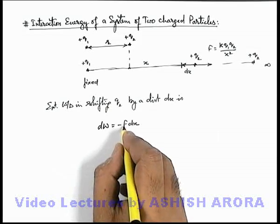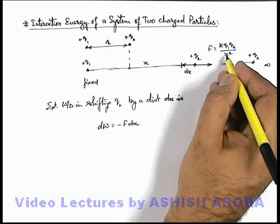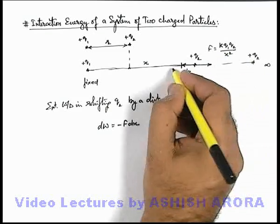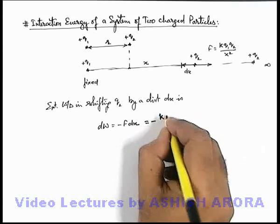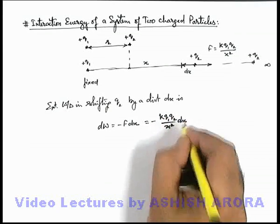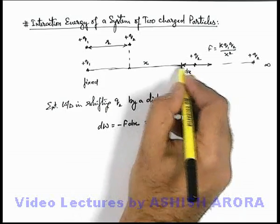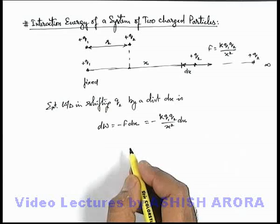If we substitute the value of force, the external force must be exactly equal to the Coulombian force just to displace it slowly. So here it can be written as minus kq1q2 by x squared dx. I've taken this negative sign because x is decreasing and dx is taken opposite to the direction of x.